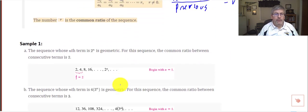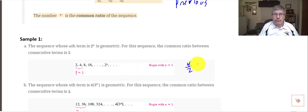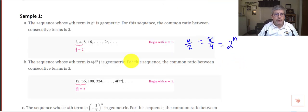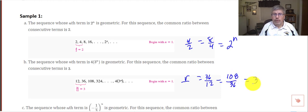Here are some samples of geometric sequences. The sequence 2, 4, 8, 16 has a ratio of 4 over 2, which is the same as 8 over 4. So the common ratio is 2, or 2 to the n. Here we have the sequence 12, 36, 108. Our r equals 36 over 12, which is the same as 108 over 36, equal to 3.